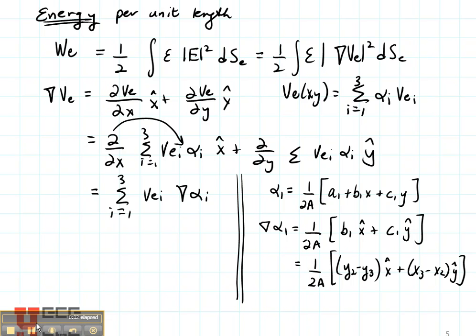In our last lecture, we defined the energy per unit length which had the gradient of the elemental potential in it. And then we defined the gradient of the elemental potential as being the sum of the node voltages times the gradient of the shape function.